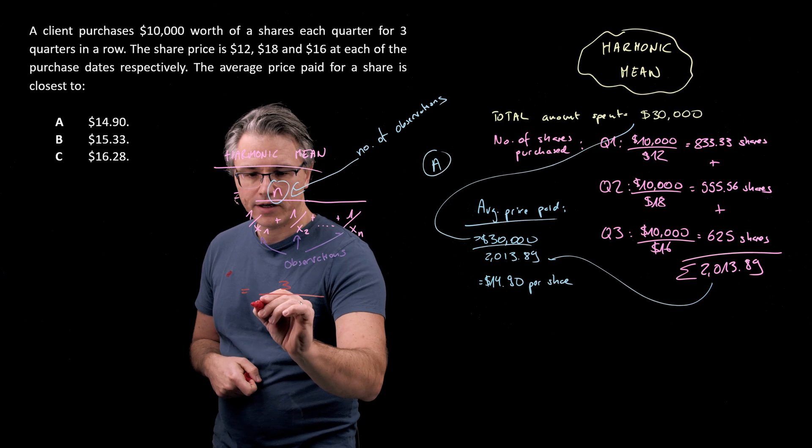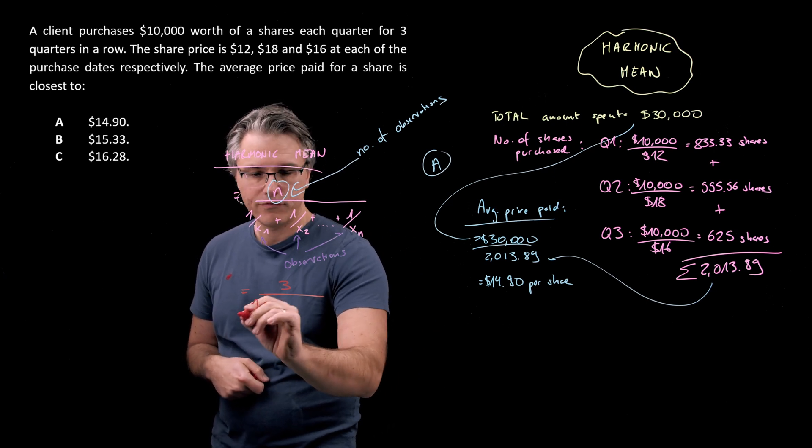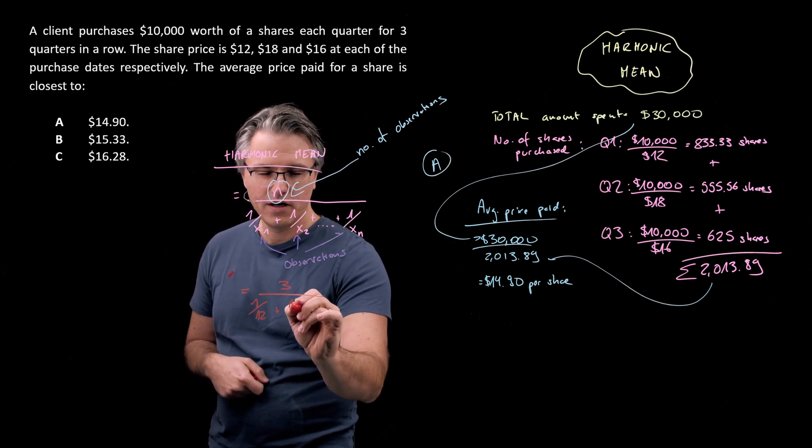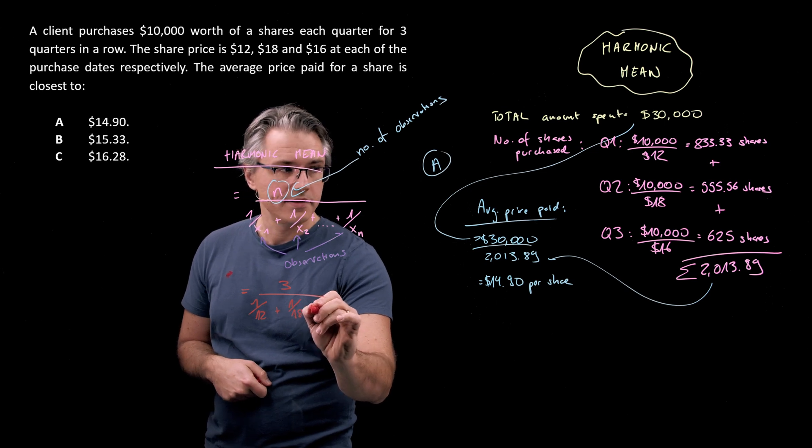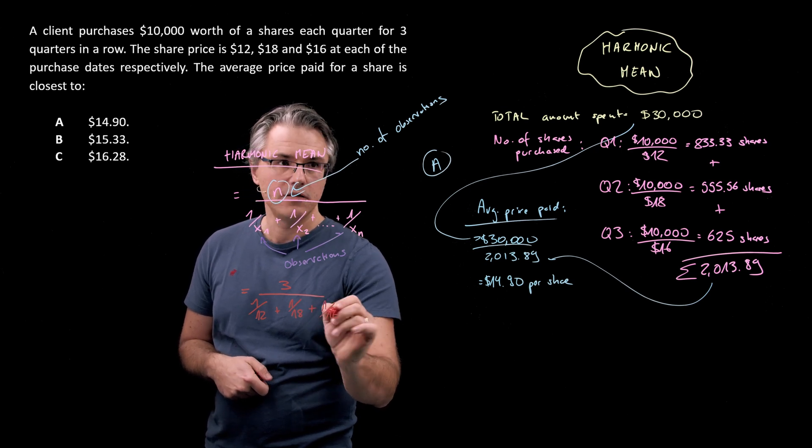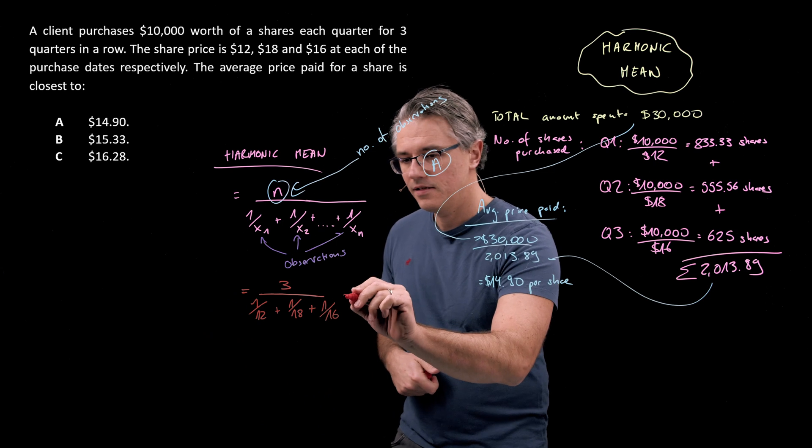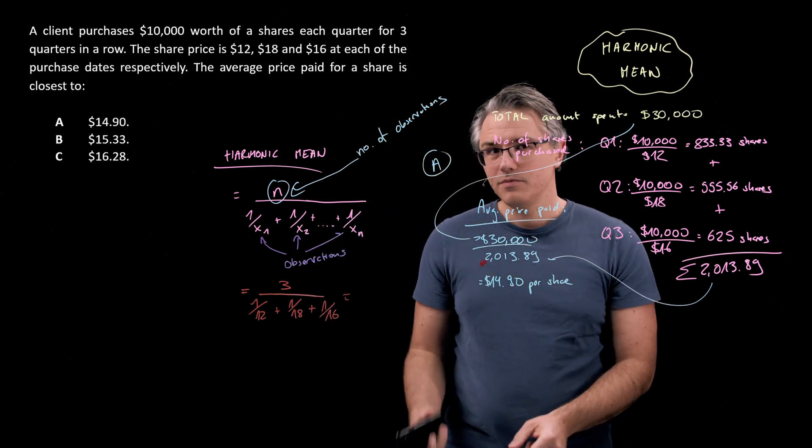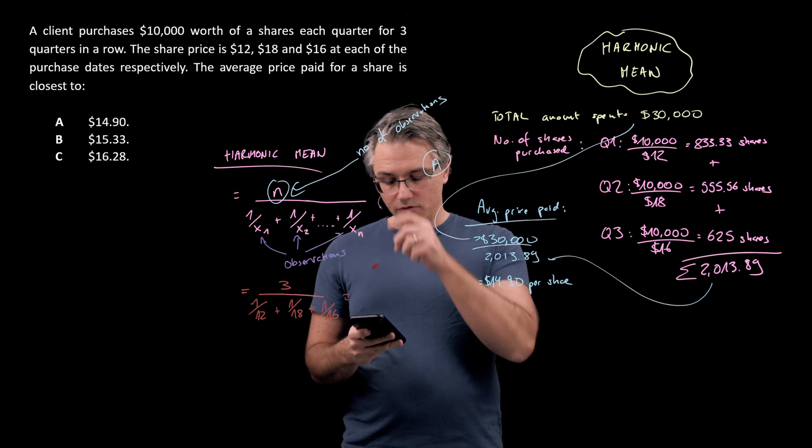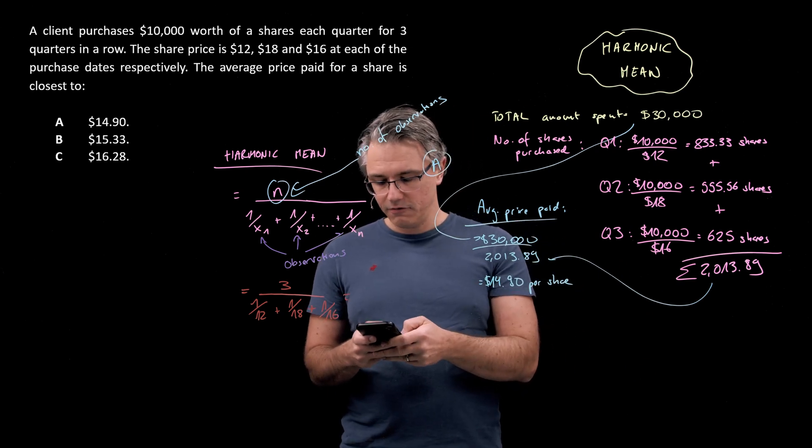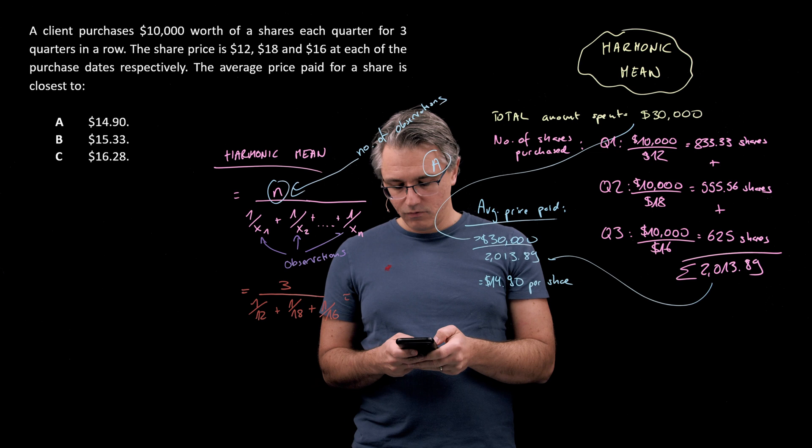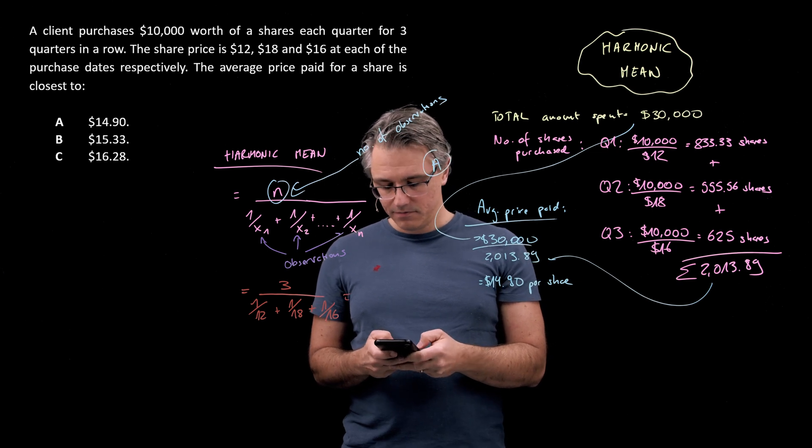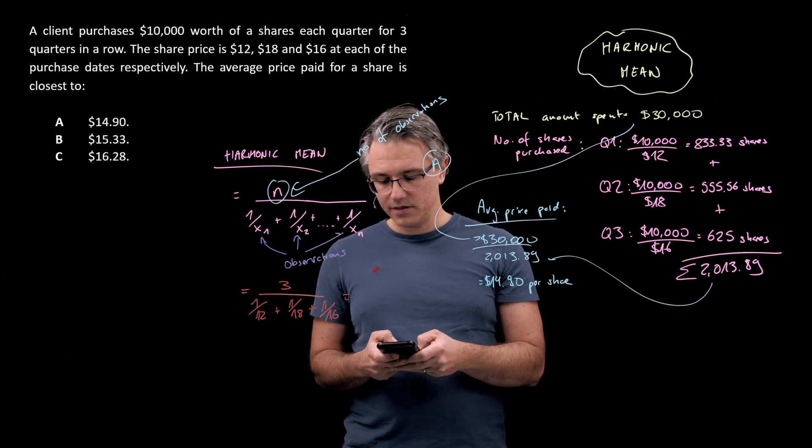So what you do in the bottom of the fraction in the denominator is you have 1 divided by 12 plus 1 divided by 18 and 1 divided by 16. I'm going to start with what's in the bottom here.